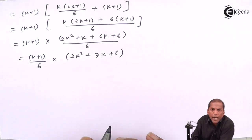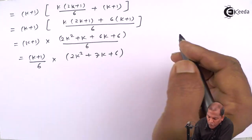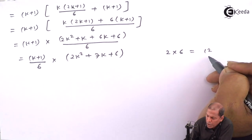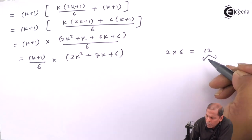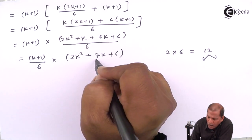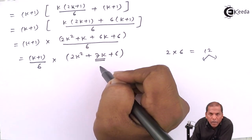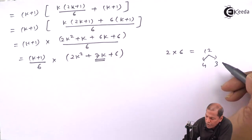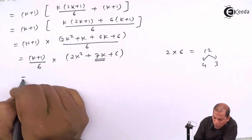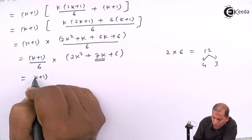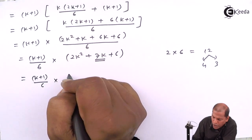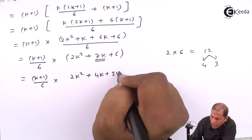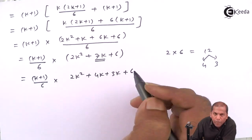Now here the second bracket is a quadratic expression. The first term coefficient is 2 and the last term is 6. So 2 into 6 gives us 12. We have to factorize 12 in such a way that we get the middle term as 7K. So 12 can be written as 4 into 3. The next step is (K+1) upon 6 into 2K square plus 4K plus 3K plus 6.